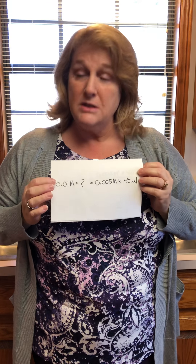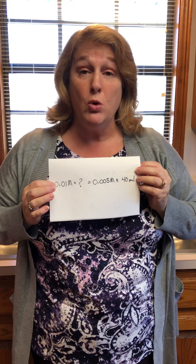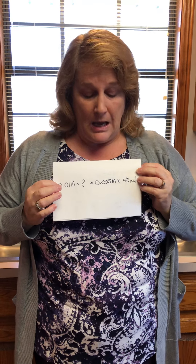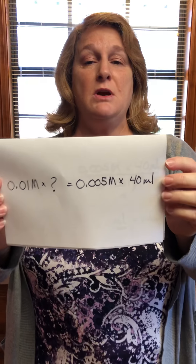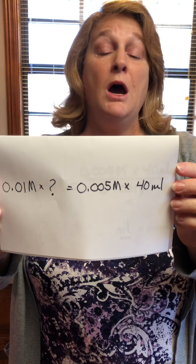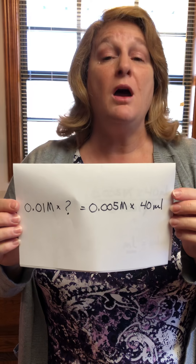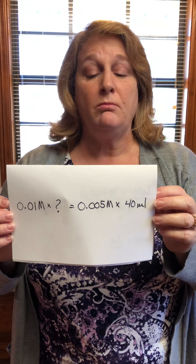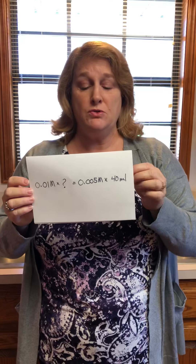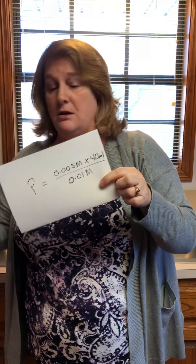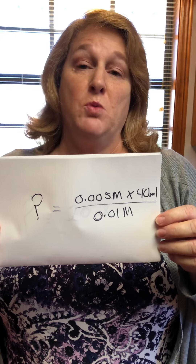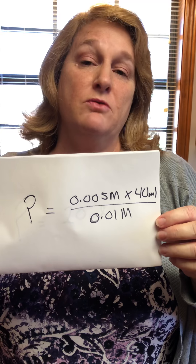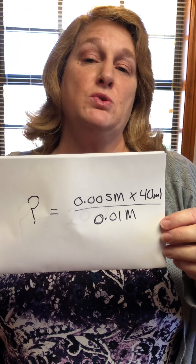In our case, we have a 0.01 molar stock solution, and what we need is 40 milliliters of a 0.005 molar solution. The question is: how are we going to do that? We can rearrange our equation so that we have the unknown — I'll use a question mark as the variable — and get all our numbers on one side.